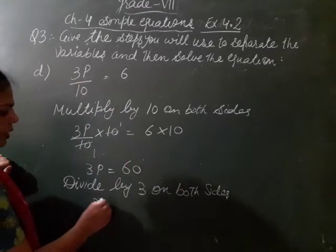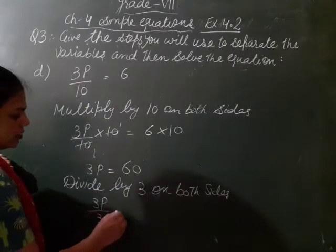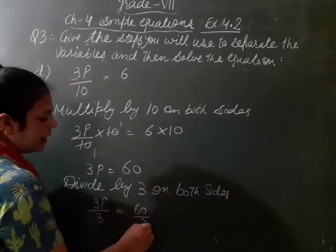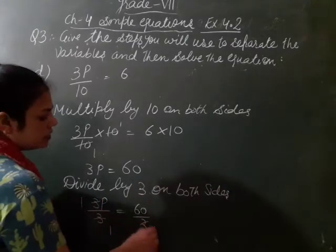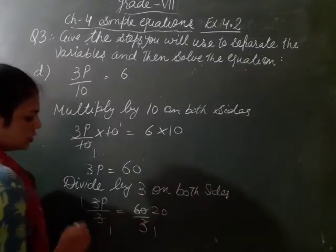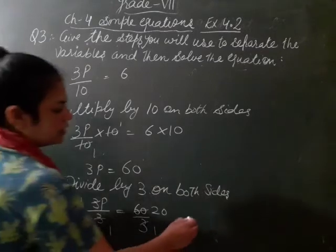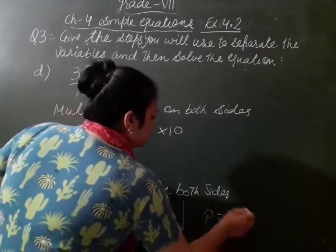So it becomes 3p divided by 3 is equal to 60 divided by 3. 3 twos are 6. So what is the value of p? That is p is equal to 20.